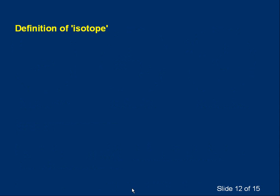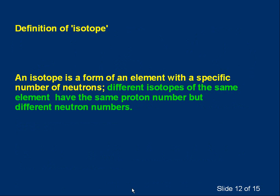Here's a definition of isotopes that comes up in exams. An isotope is a form of an element with a specific number of neutrons. Different isotopes of the same element have the same proton number but different neutron numbers. That's the key point to bring out in an exam: same number of protons, but different numbers of neutrons in their nuclei.